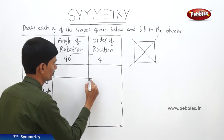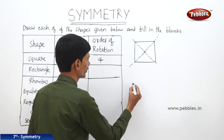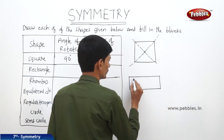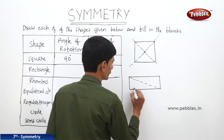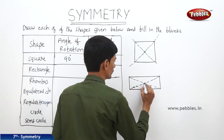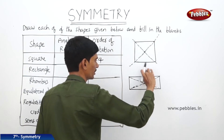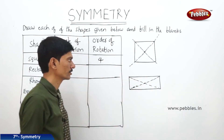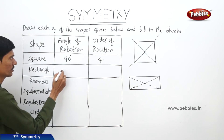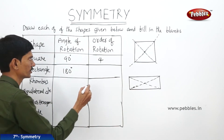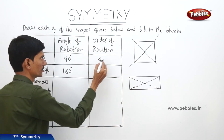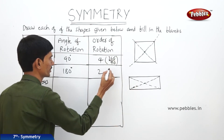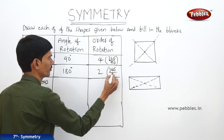Now in case of a rectangle, what is the angle of rotation? Here also, the center is the point of intersection of the two diagonals. If you rotate the rectangle through 90 degrees, we do not get back its original position. So the angle of rotation is 180 degrees. Then the order of rotation is 2, because 360 degrees divided by 180 degrees equals 2.